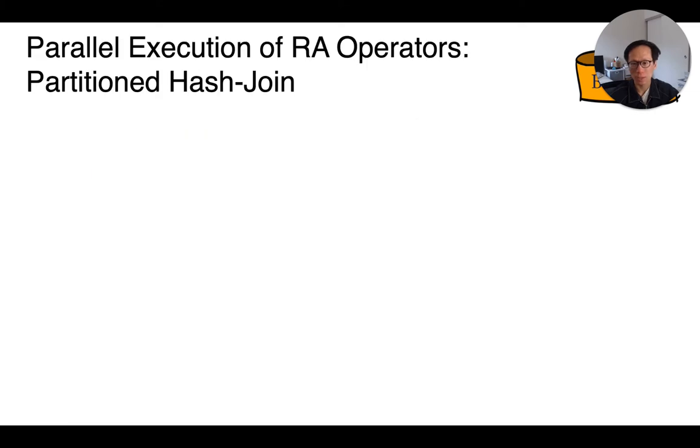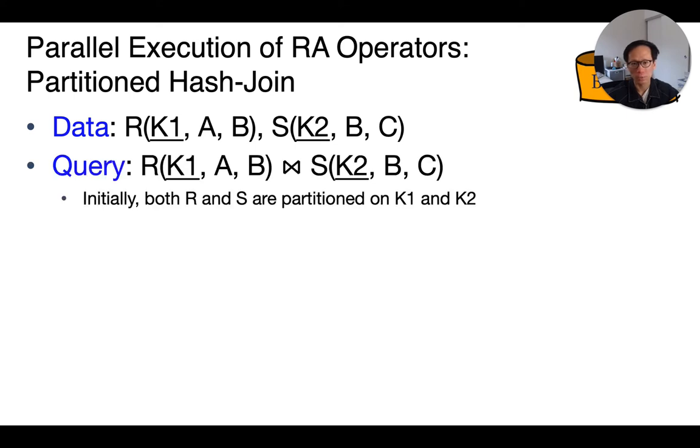As a recap, let's also review two different join algorithms that we have covered earlier for parallel relational databases. Suppose we have two relations, R and S, with the keys underlined here shown on the slide, and we want to do a join of these two relations on their common attributes.